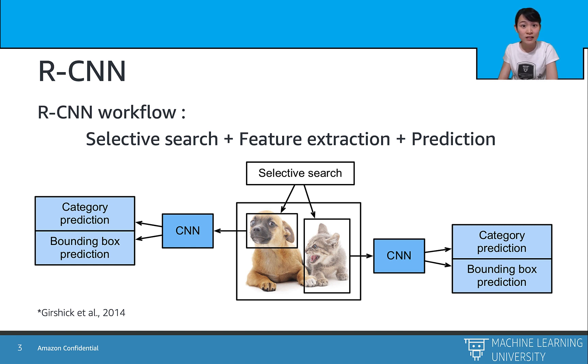So the selective search extracts some bounding boxes and then going through a pre-trained convolutional neural network and only extracts these features. The output contains two folds: the category predictions and the bounding box predictions. Let's take a look at these steps in detail.